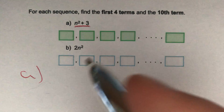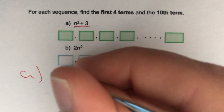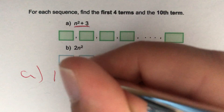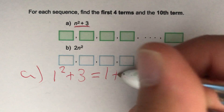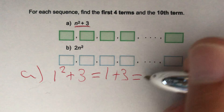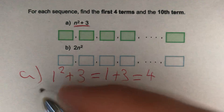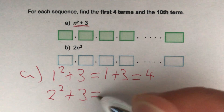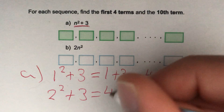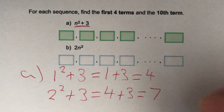For part A, we're asked for the first four terms. For term number 1, we replace n with 1. We do 1 squared plus 3. 1 squared is just 1, plus 3 gives us 4. For our second term, we replace n with 2. So 2 squared plus 3. 2 squared gives us 4, we add 3, which gives us 7.